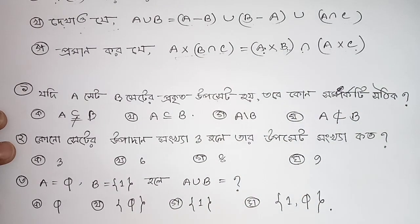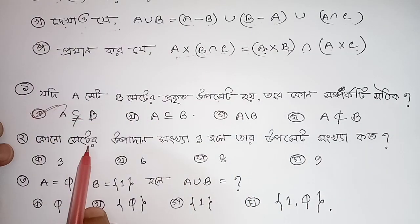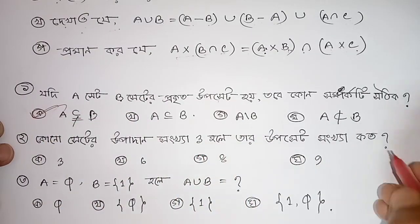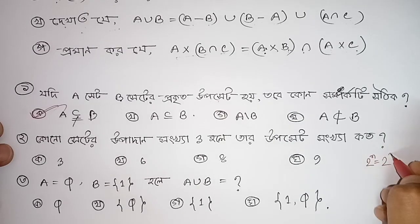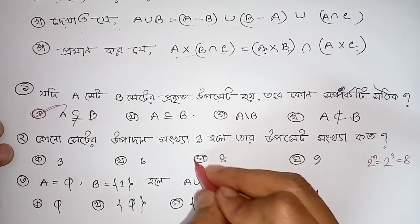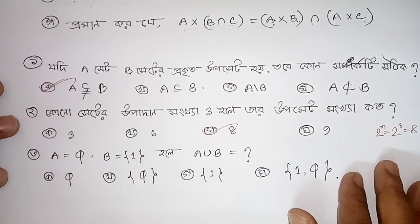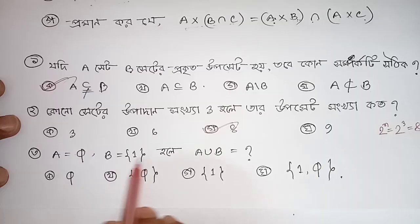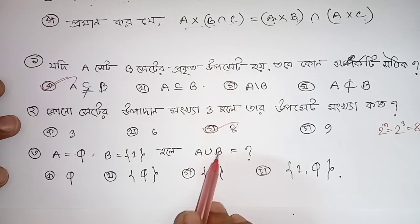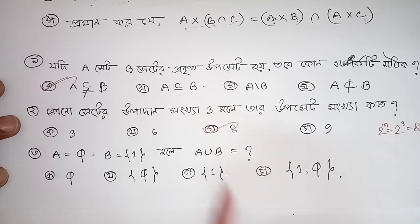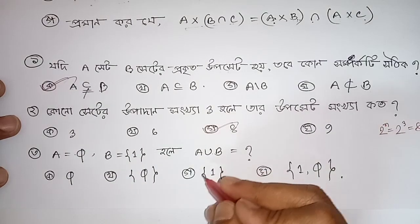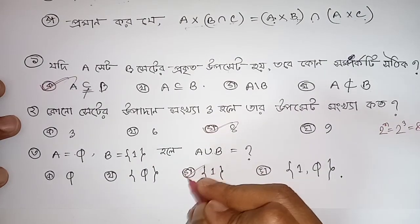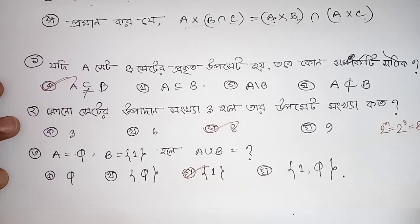So our answer: the set has 3 elements, so the number of subsets is 2 to the power 3, which means 8. That is our answer. If A is empty set and B is non-empty, then A union B means the elements that meet inside the two sets.